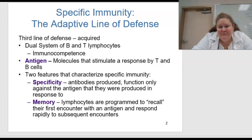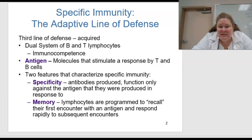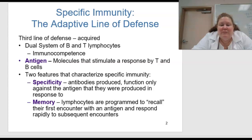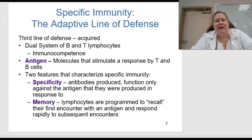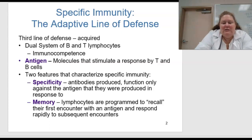We have an antigen, and this is a molecule that stimulates a response by both the T and the B cells. There are two features that characterize specific immunity. One is specificity — antibodies are produced and function only against the antigen they were produced in response to. And also there are memory cells — lymphocytes that are programmed to recall their first encounter with the antigen and respond rapidly to subsequent encounters.